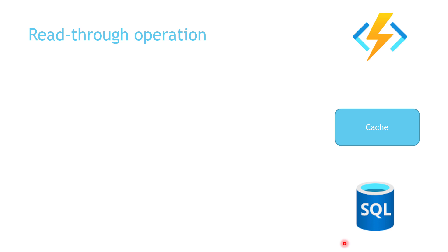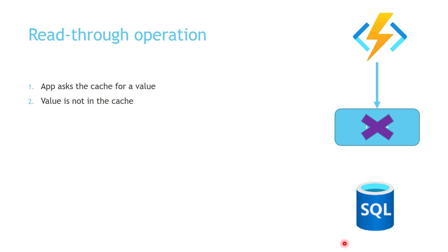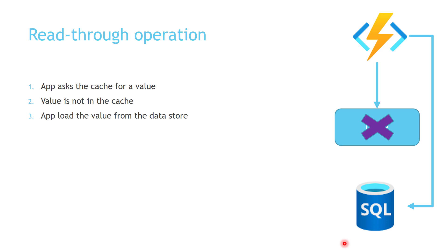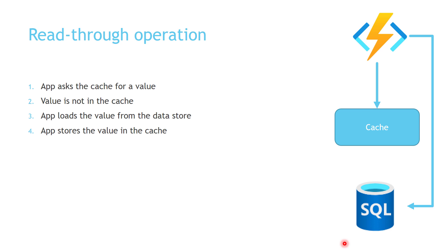For the read-through operation, the application checks the value in the cache. If it doesn't find the value in the cache, it gets the value from the data store, and then the application stores that data in the cache.